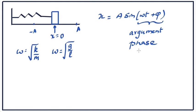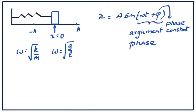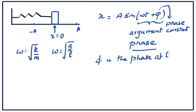Notice the phase of the motion keeps changing — it's a function of time. The phase determines which part of the oscillation you are at. Now, this number phi is a constant — it's called the phase constant. Don't confuse the two: one is the phase and the other is the phase constant. The phase constant is the value of the entire argument — that is, the value of the phase at time t equal to 0. So phi is the phase at t equal to 0.